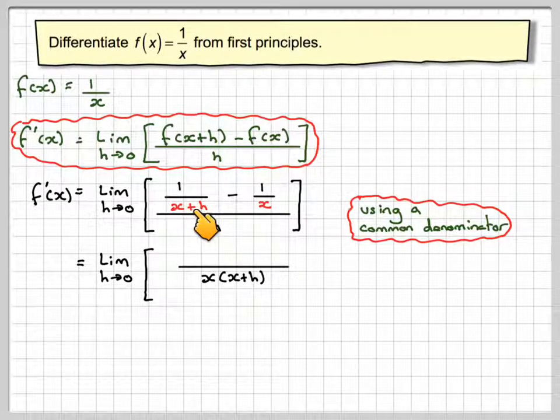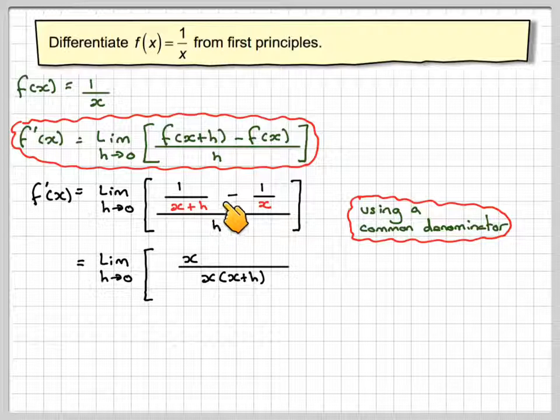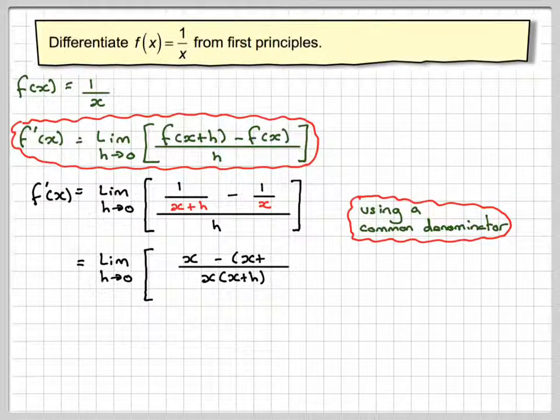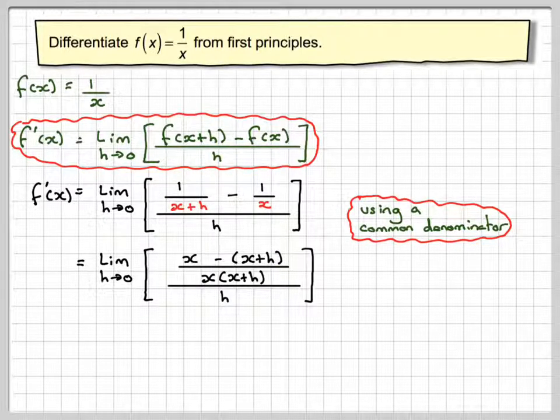And then here we've multiplied this by x, we must multiply this 1 by x, and then here we multiply by (x+h), so we're going to have minus (x+h). Don't forget the brackets here and here because minus all of it, all over h.